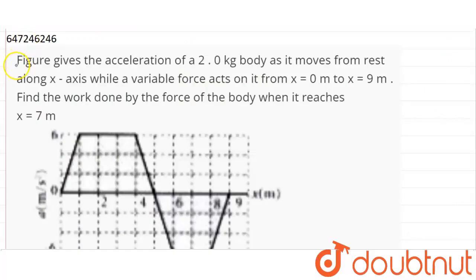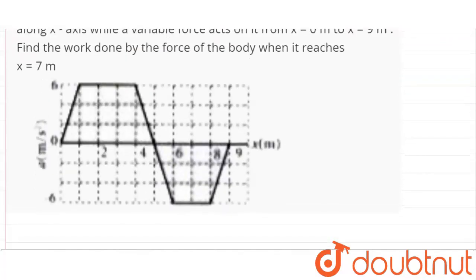Hello friends. The figure gives the acceleration of a 2kg body as it moves from rest along the x-axis, while a variable force acts on it from x=0 meter to x=9 meter. Find the work done by the force on the body when it reaches x=7 meter. So this graph is given — this is an acceleration-displacement graph. The x-axis is plotted on displacement and the y-axis is plotted on acceleration in meter per second square.